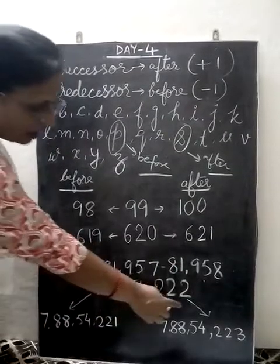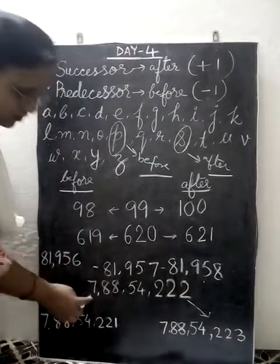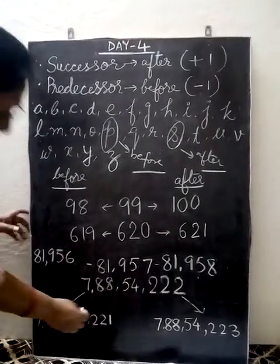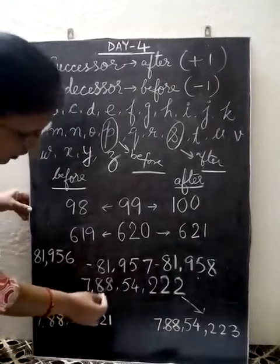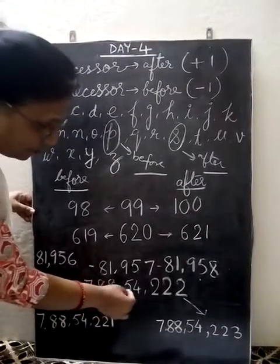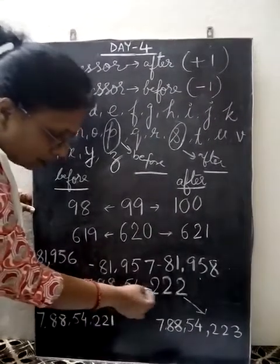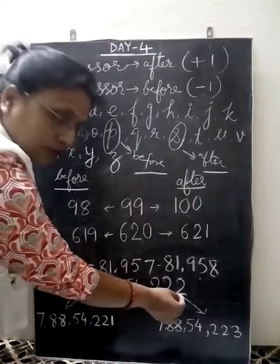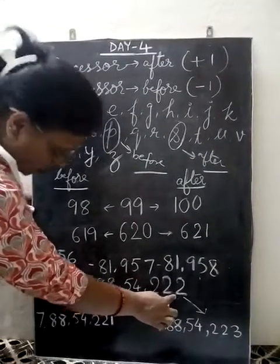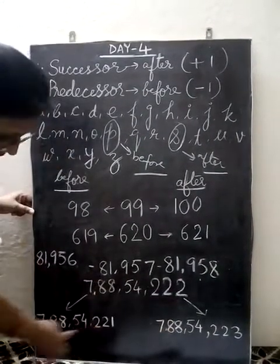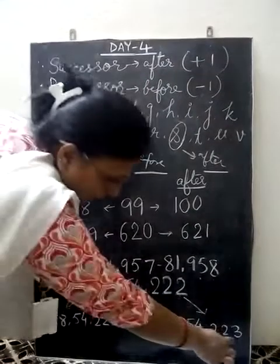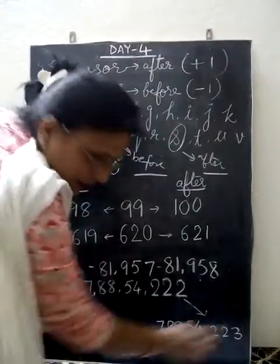Now the large number I have taken is an 8-digit number: 7 crore 88,54,222. Here 2 minus 1 is 1 — that is the predecessor — and 2 plus 1 is 3 — that is the successor.